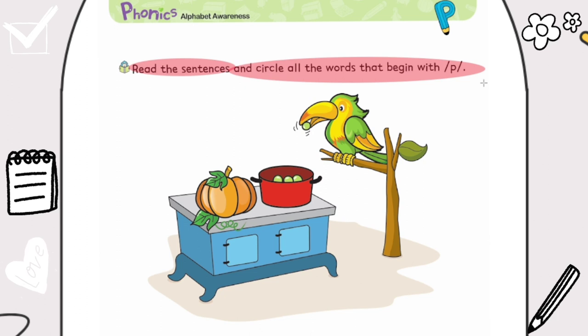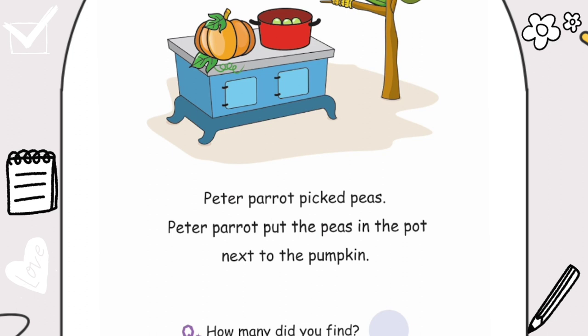Alright, let's read it one more time. P says P-P-P. P says P-P-P. Alright, now let's go to our reading. Peter Parrot picked peas. Peter Parrot put the peas in the pot next to the pumpkin.